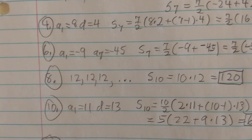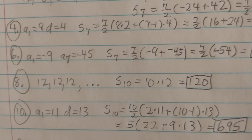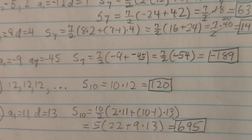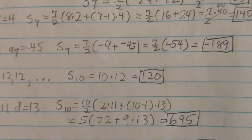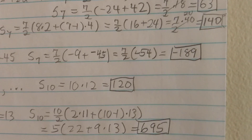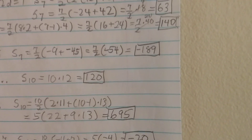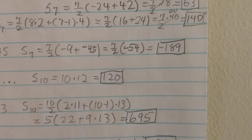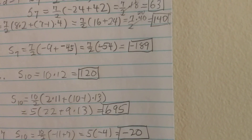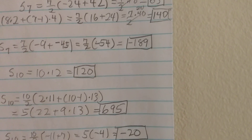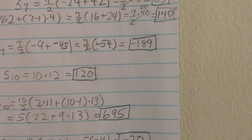For problem 4, a1 equals 8 and d equals 4. So S sub 7 is 7 over 2 times 2 times 8 plus 7 minus 1 times 4, which is 7 over 2 times 16 plus 24. Since 16 plus 24 is 40, and 7 over 2 times 40 equals 20 times 7, the answer is 140.